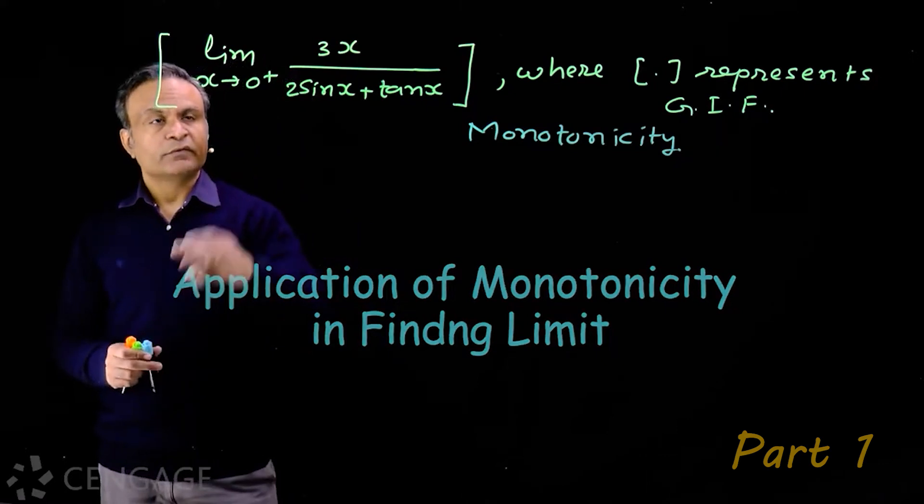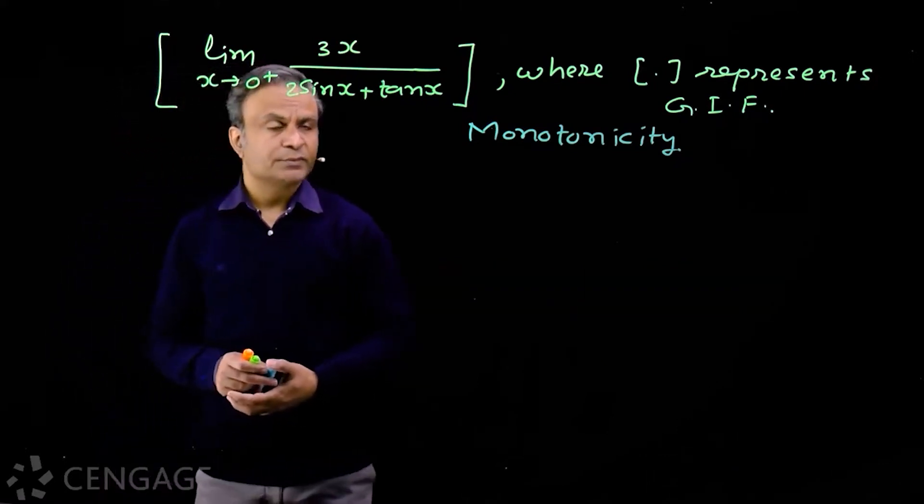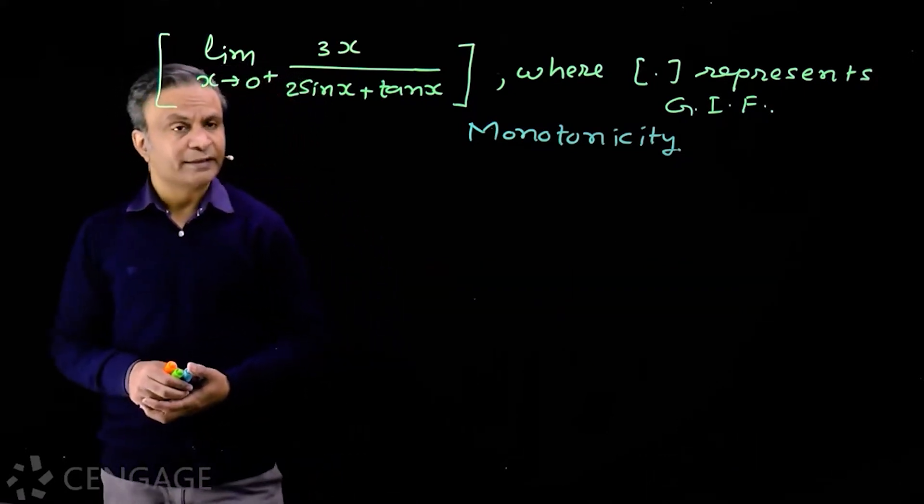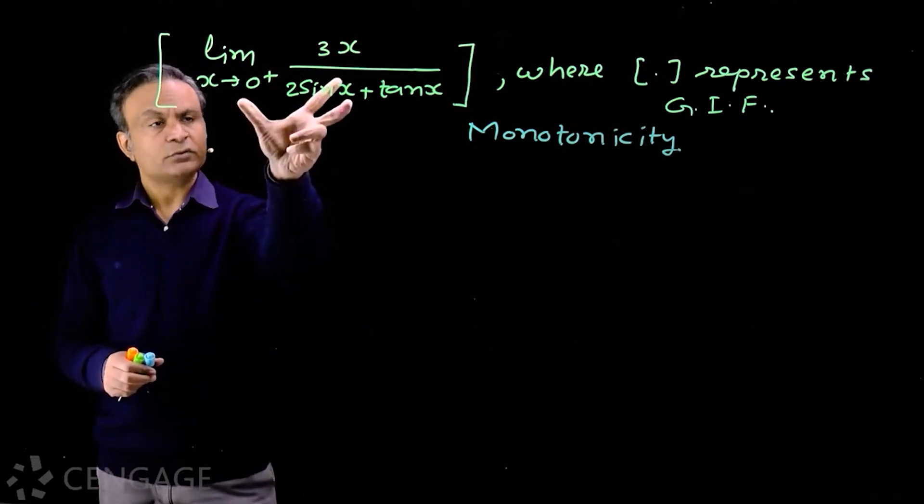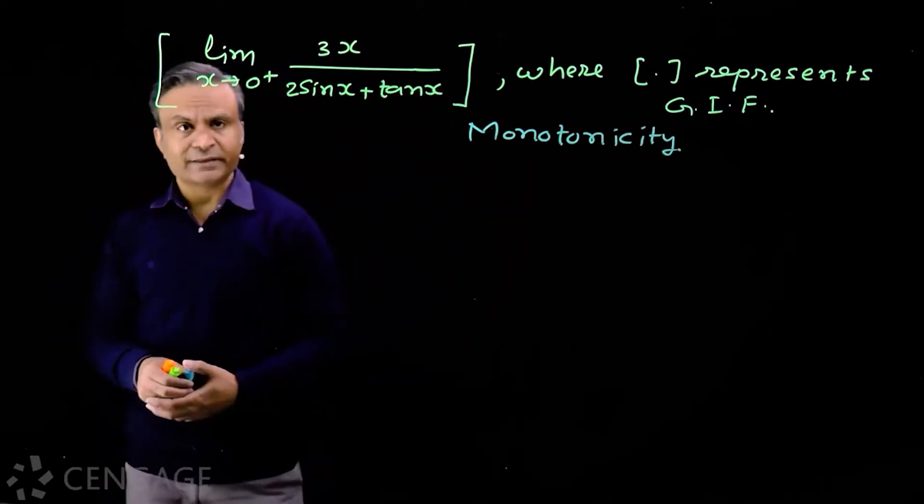We have this limit: limit as x tends to zero plus of 3x upon 2 sine x plus tan x. We have to find greatest integer less than or equal to this limit, where square brackets represent greatest integer function.